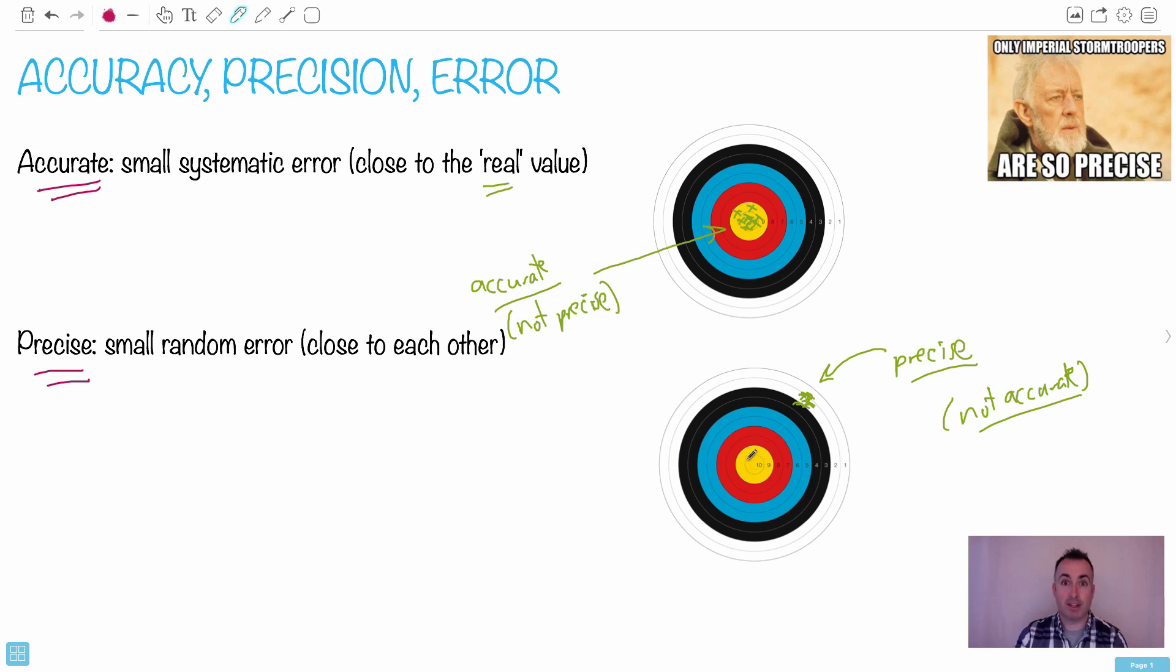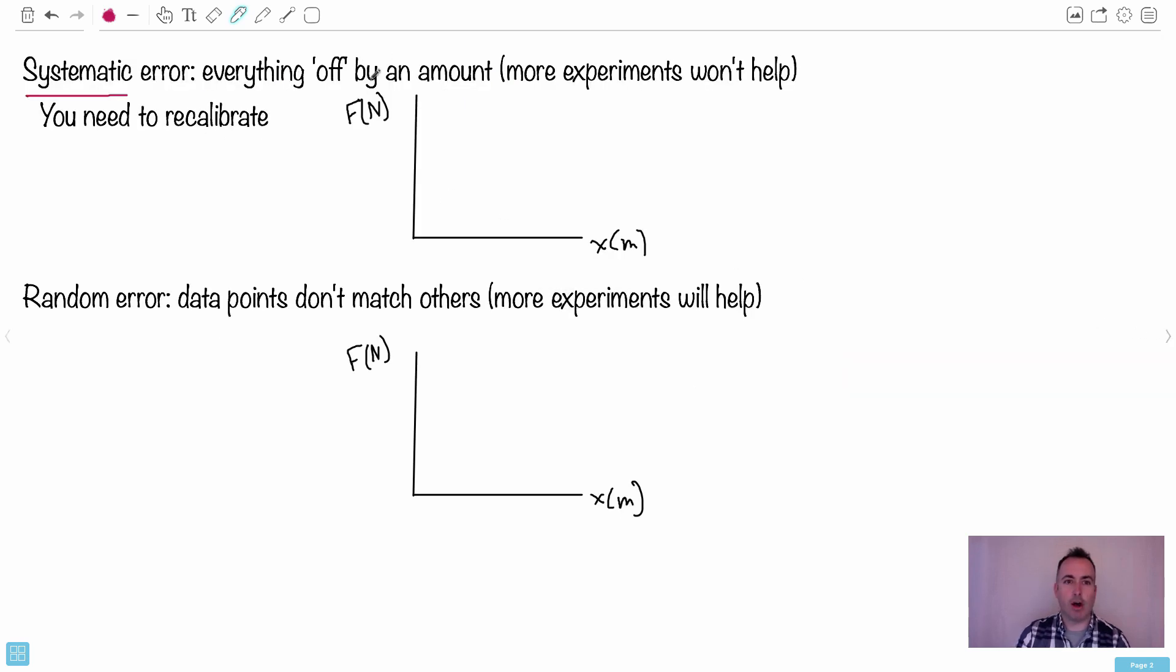Whereas over here, can you see you're trying to shoot the center of the target, but instead you're way off all the time. So in this case here, everything is off by a certain amount. And what I mean by that is that more experiments won't help. You probably need to recalibrate your experiment.